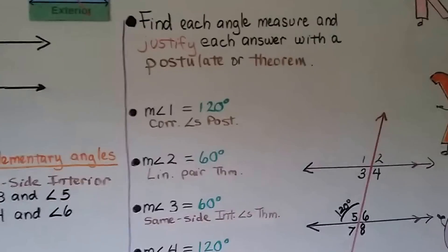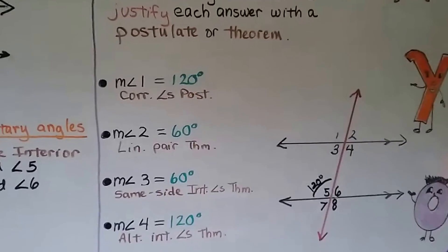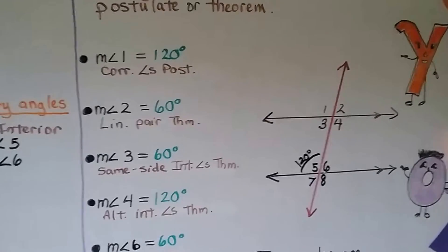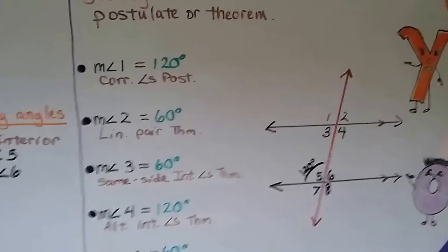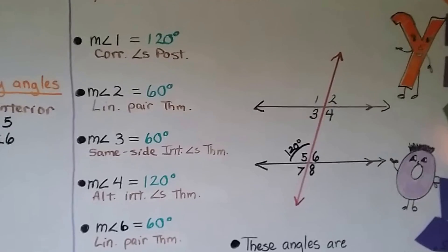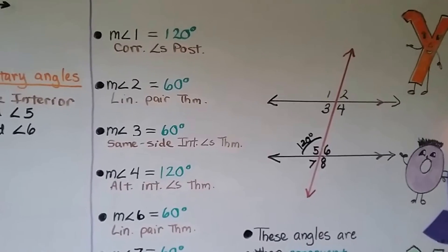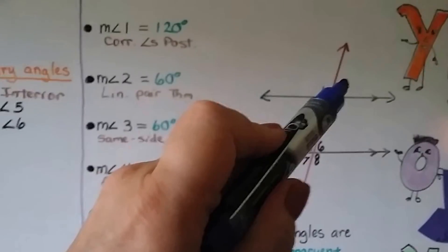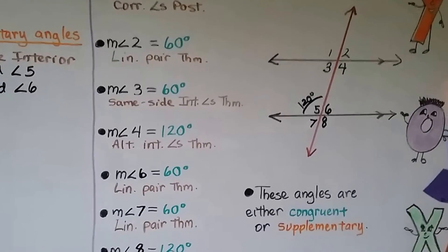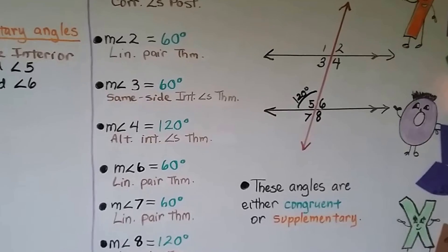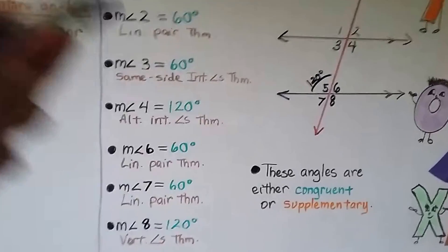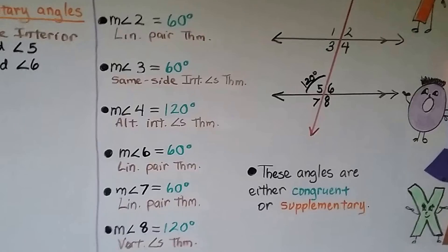We can find each angle measure and justify each answer with a postulate or theorem. Looking at this diagram, the measure of angle 5 is 120 degrees. Then angle 1 is also 120 degrees by the corresponding angles postulate. The measure of angle 2 would be 60 degrees because of the linear pair theorem — if angle 1 is 120 degrees, angle 2 must be 60 so they total 180. And the measure of angle 3 would have to be 60 degrees because of the same side interior angles theorem.